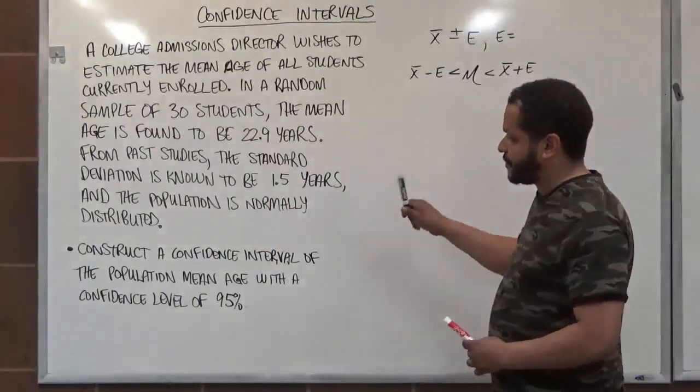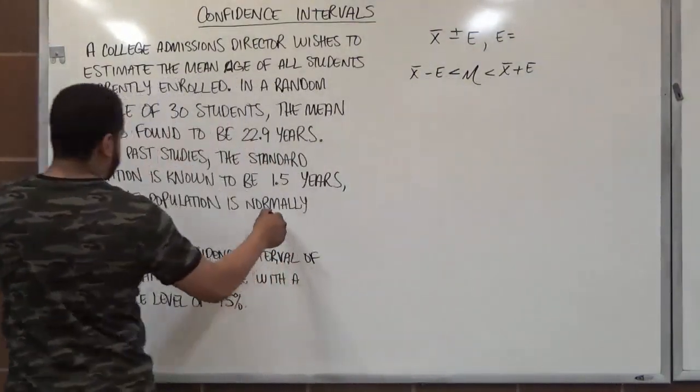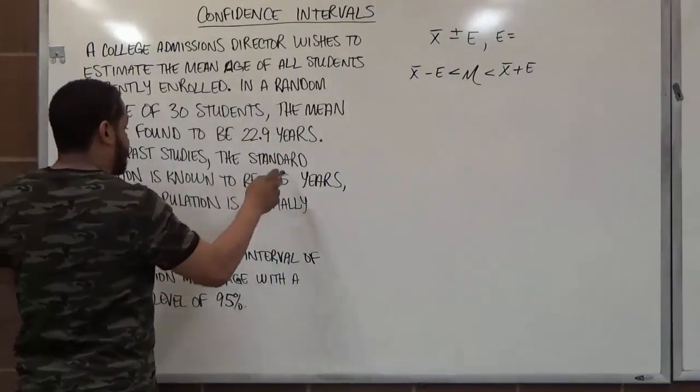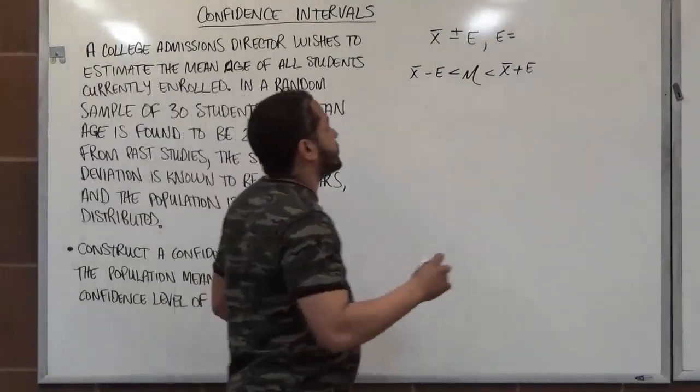And it's a z-distribution, it's normal distribution because of it. Not only is the population normally distributed, but since the standard deviation is known to be a value, we have to use the formula using the z-score.